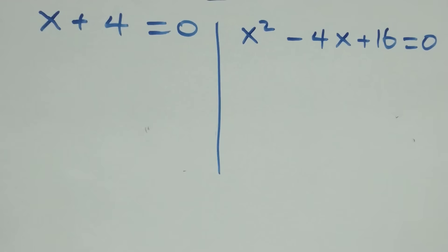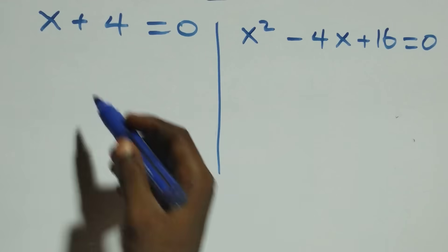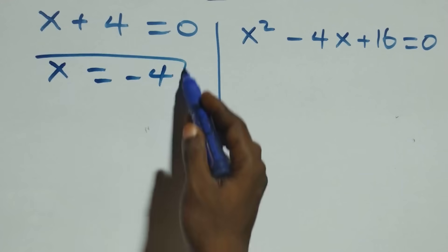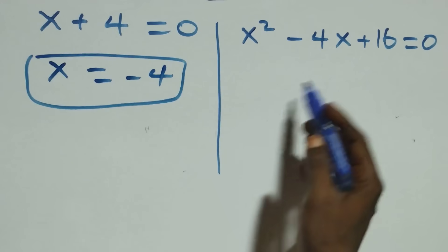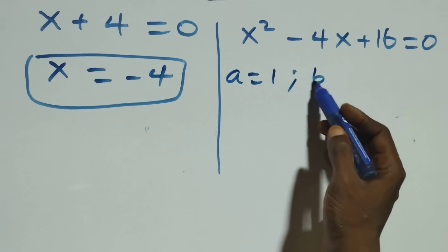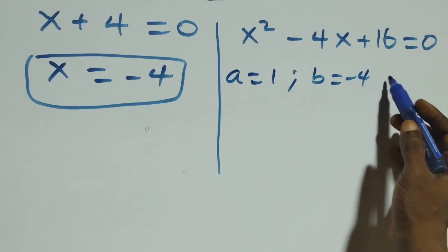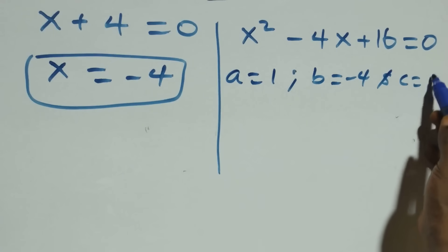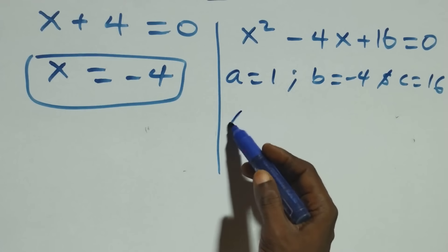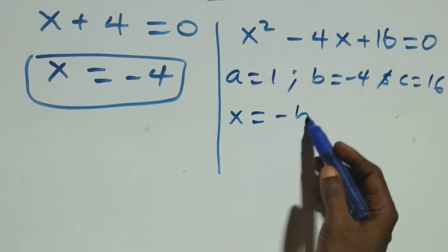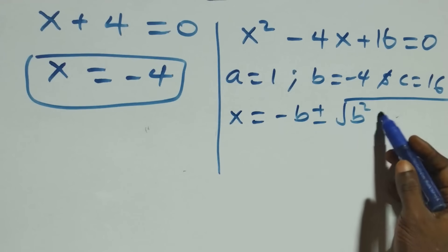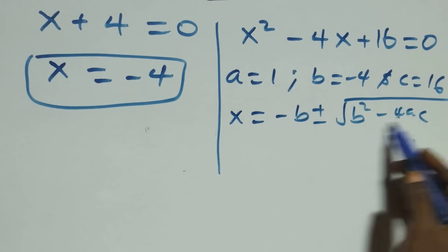From this we have two possible cases. Solving the first factor: x plus four equals zero gives x equals negative four, which is a real solution. Then we have a quadratic equation where a equals 1, b equals negative four, and c equals 16. Applying the quadratic formula: x equals minus b plus or minus square root of b squared minus 4ac, all over 2a.